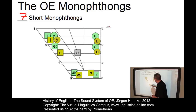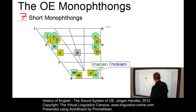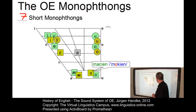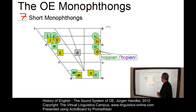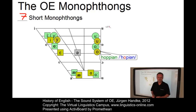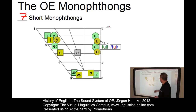And a low front vowel, short A as in 'þæt', present-day English 'that'. Then a low back vowel: 'macian', present-day English 'make'. Here is the counterpart of the long mid-high back vowel: O as in 'hopian', short O. And the short high back vowel U, as in 'full', present-day English 'full'.